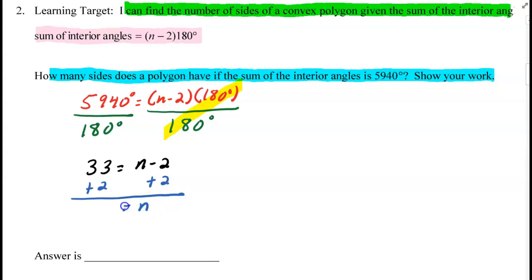And we get n equals 35. So this polygon has 35 sides.